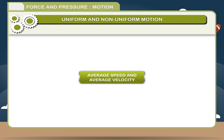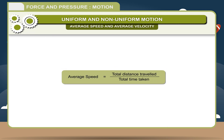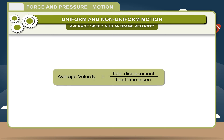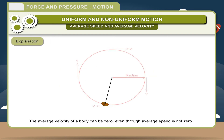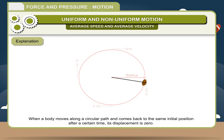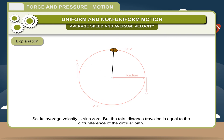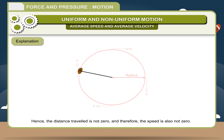Average speed equals total distance travelled divided by total time taken. The average velocity of a body can be zero even though average speed is not zero. When a body moves along a circular path and comes back to the same initial position, its displacement is zero, so its average velocity is also zero. But the total distance travelled equals the circumference of the circular path, so the distance and speed are not zero.